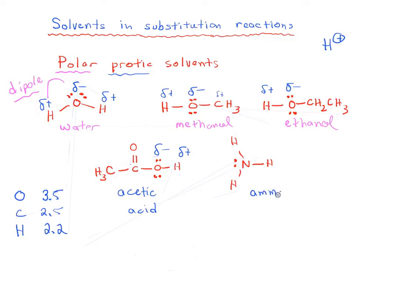Here are two more examples of polar protic solvents. We have acetic acid, which has a partial negative on oxygen and partial positive on hydrogen. And we have ammonia — nitrogen is also a pretty electronegative element with an electronegativity of about 3. So between nitrogen and hydrogen there's a fairly large electronegativity difference, giving us a partial negative charge on nitrogen and a partial positive charge on hydrogen — another dipole. So these are all examples of polar protic solvents.